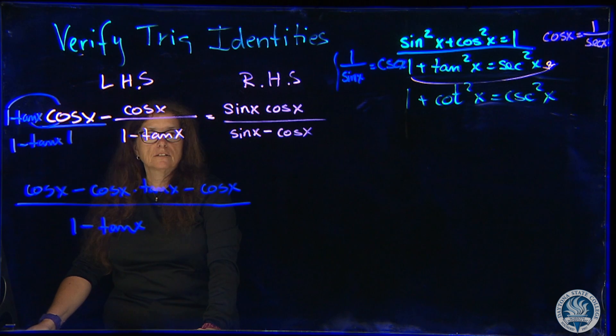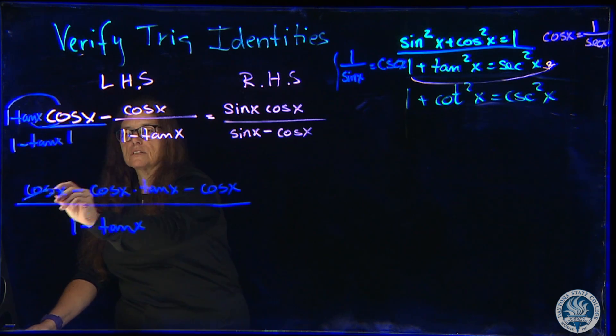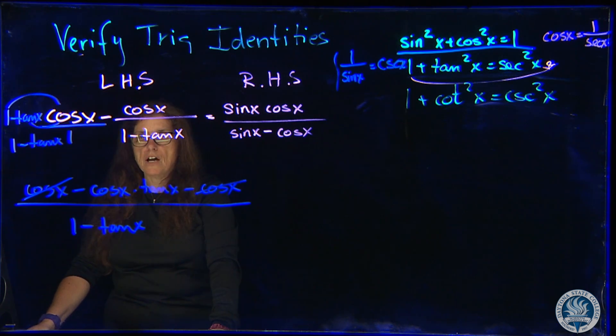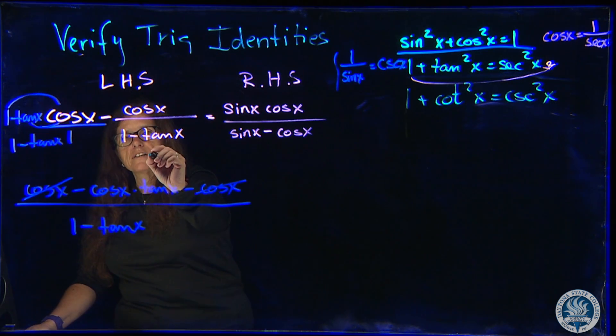We can go ahead and the cosine of x, they definitely cancel out. Now, I would say the tangent of x can be written as the sine of x.